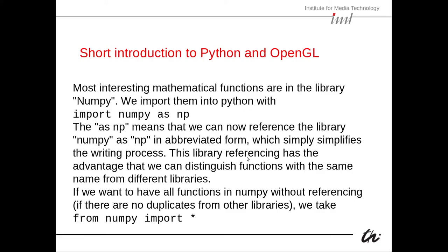This library referencing has the advantage that we can distinguish functions with the same name from different libraries. For instance, sine is also present in SciPy but with slightly different functionality. So we can distinguish 'np.sin' from 'scipy.sin'. It's good programming practice to have the library name in front of the functions. If you want all functions without referencing, you could write 'from numpy import *', but I discourage this because it leads to confusion and bugs that are difficult to find.